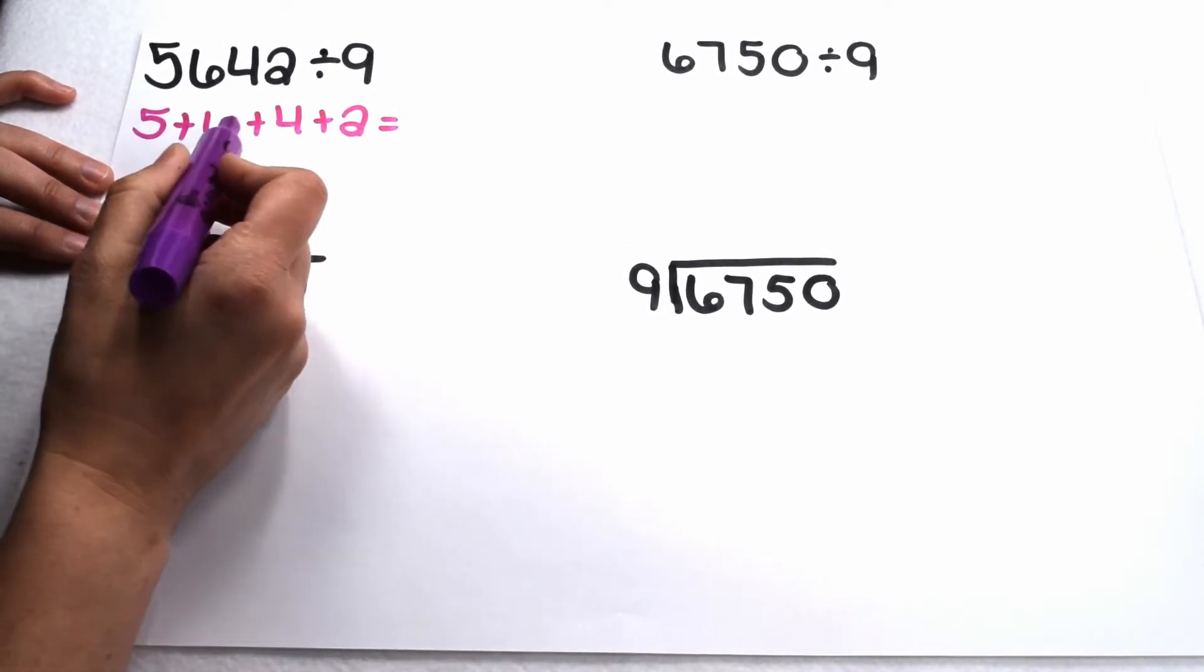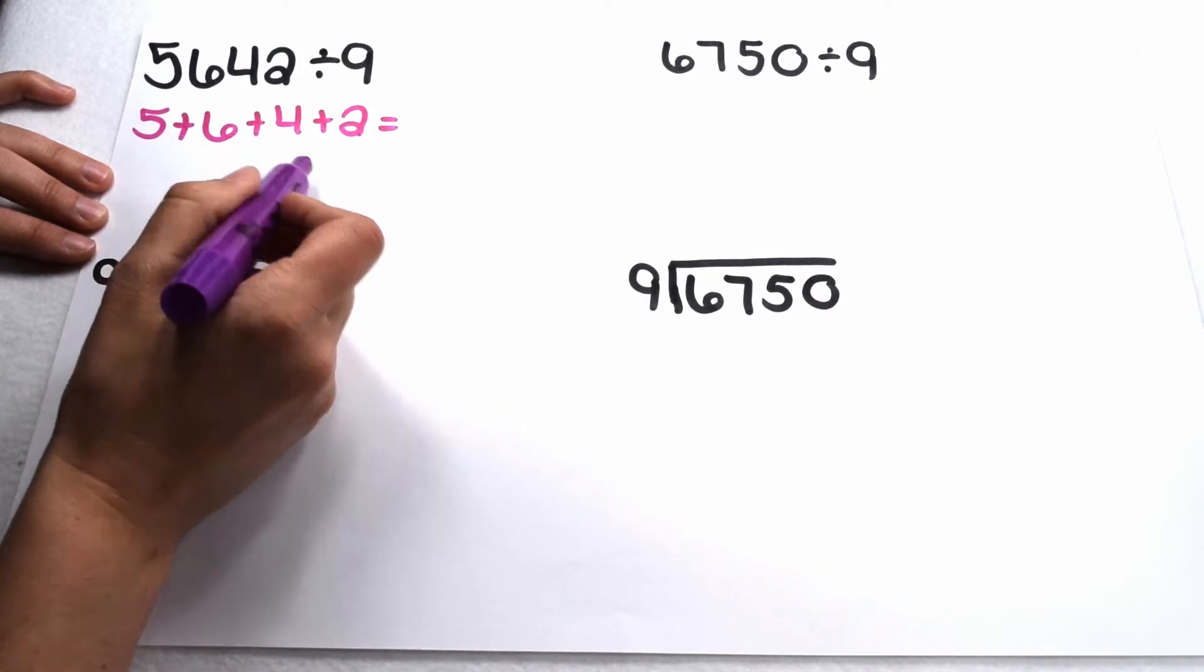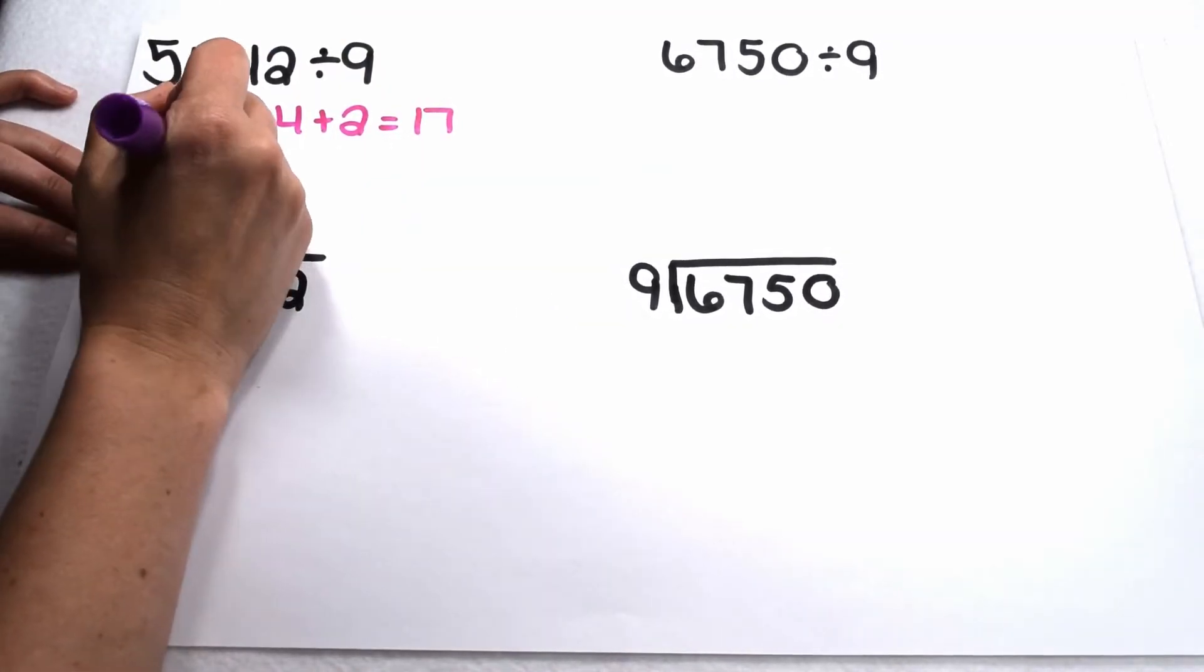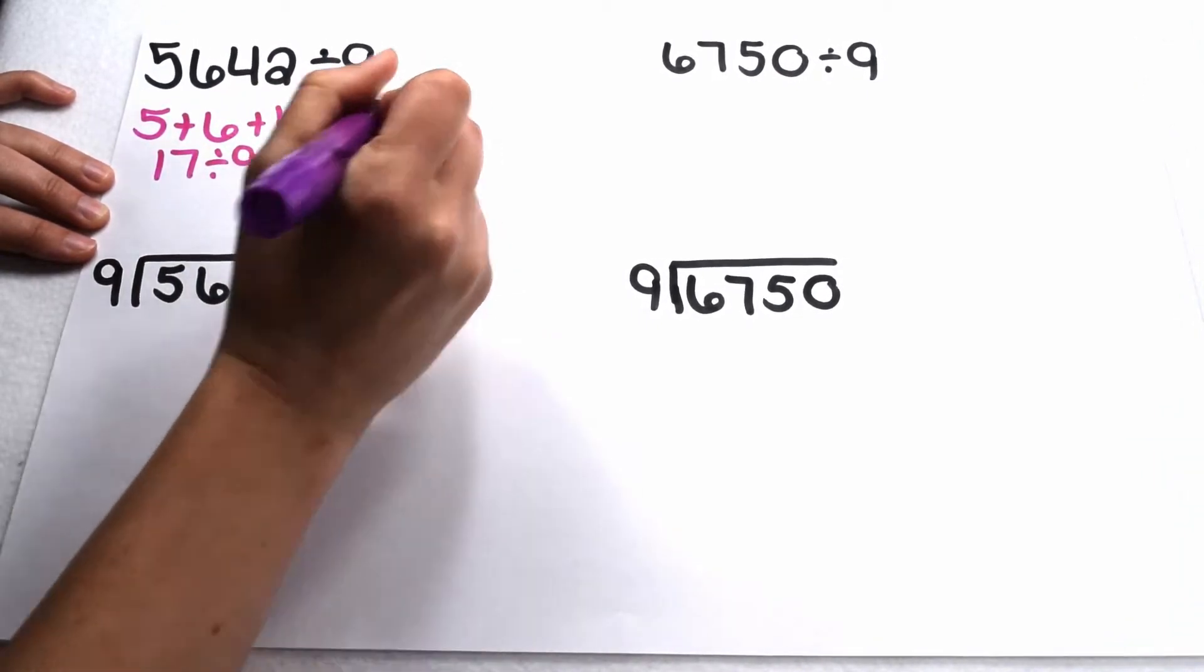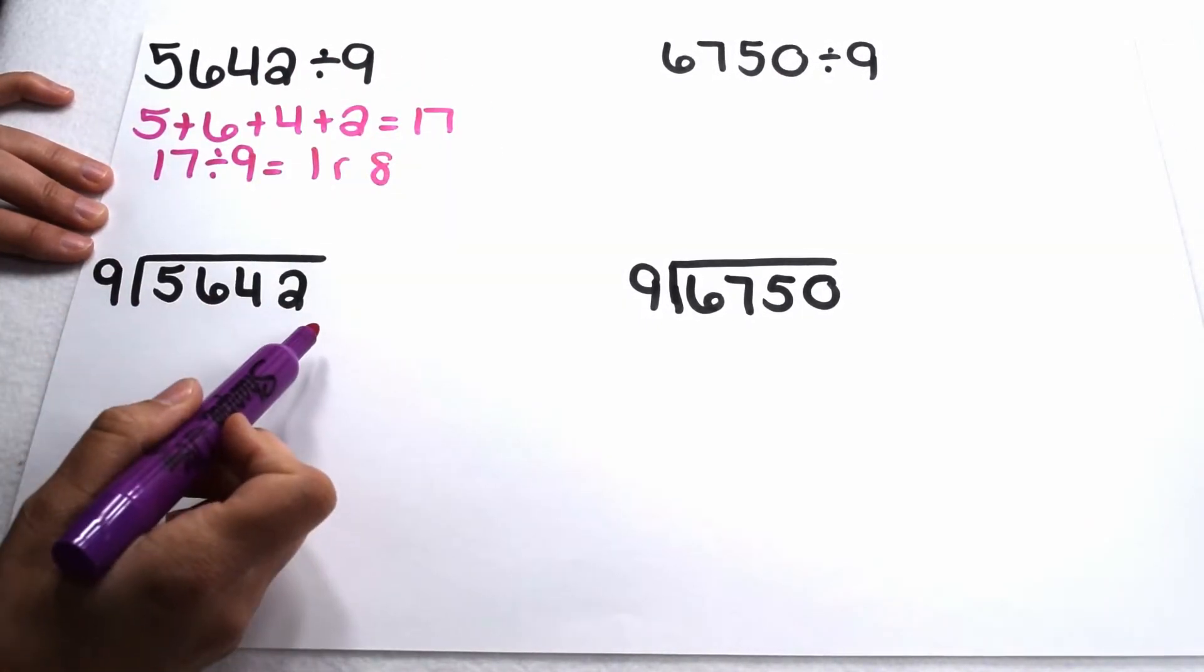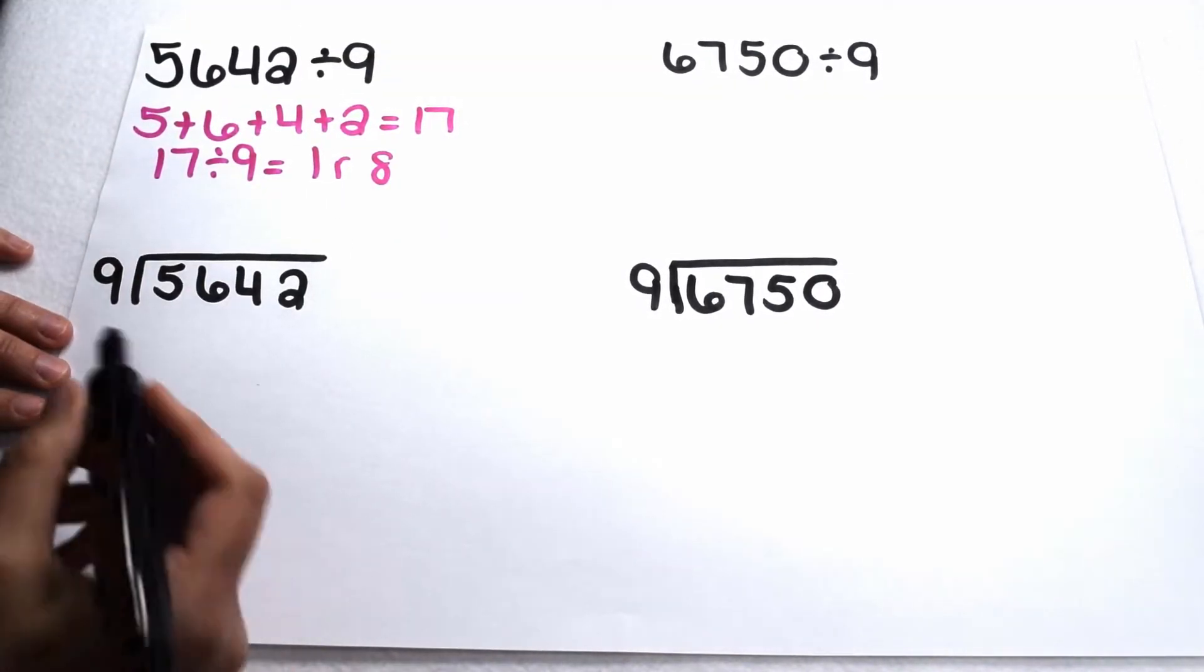That means I need to add together 5, 6, 4, and 2. 5 plus 6 is 11, 11 plus 4 is 15, 15 plus 2 is 17. 17 isn't divisible by 9. 17 divided by 9 gives me 1 remainder 8. This tells me if I divide 5,642 by 9, I should get a remainder. Let's test it out.